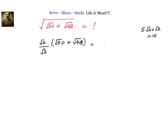Then it will become √2 by √2 into √50 plus √48. This will become √100 plus √96 divided by √2.